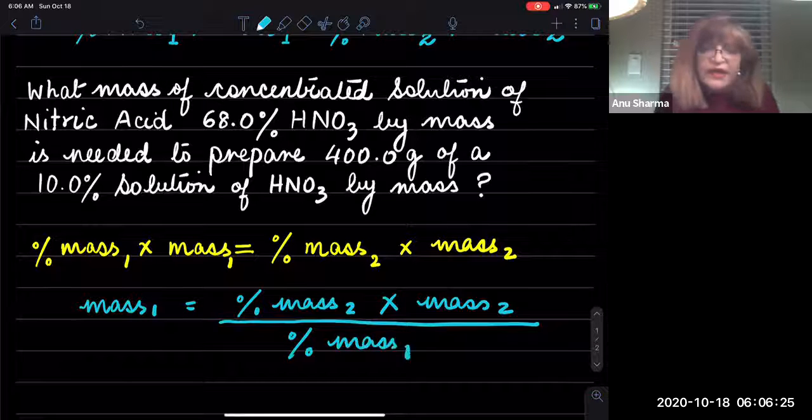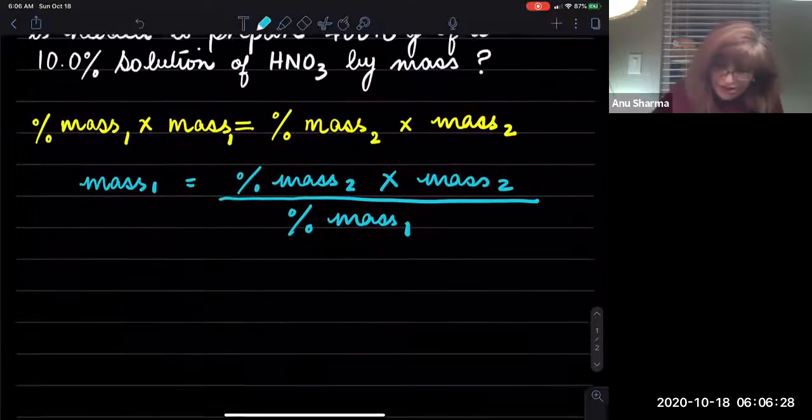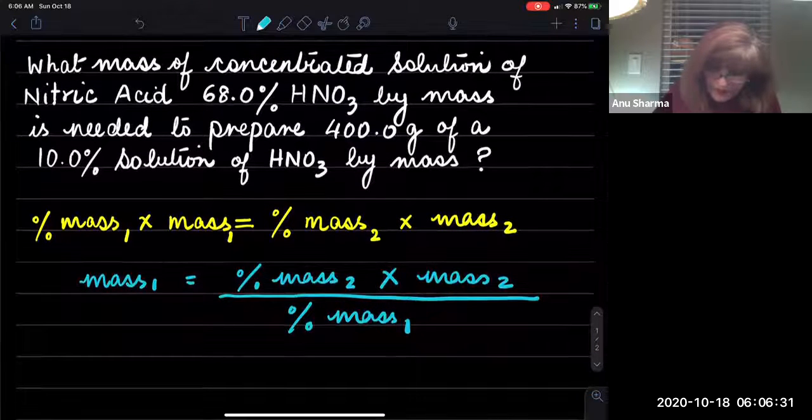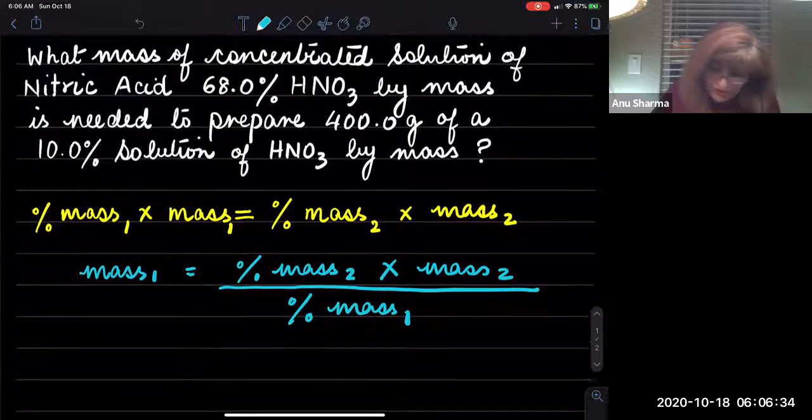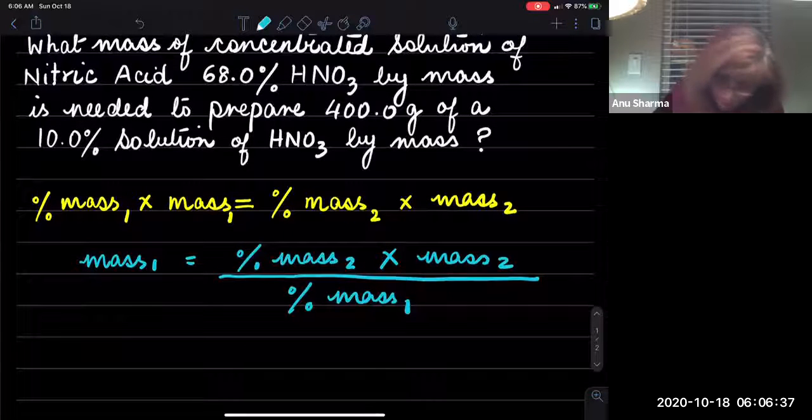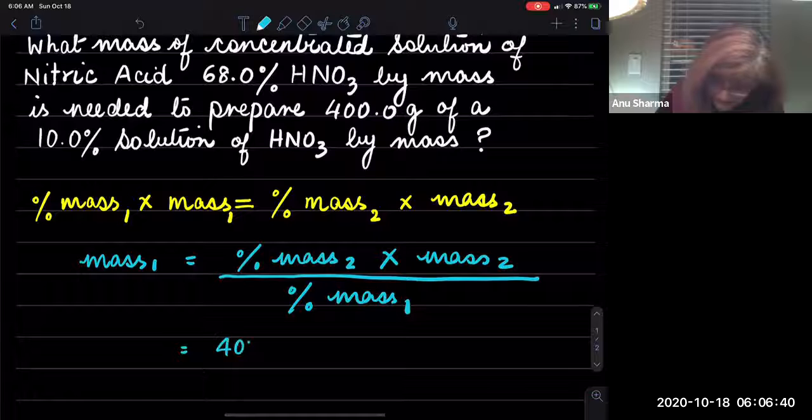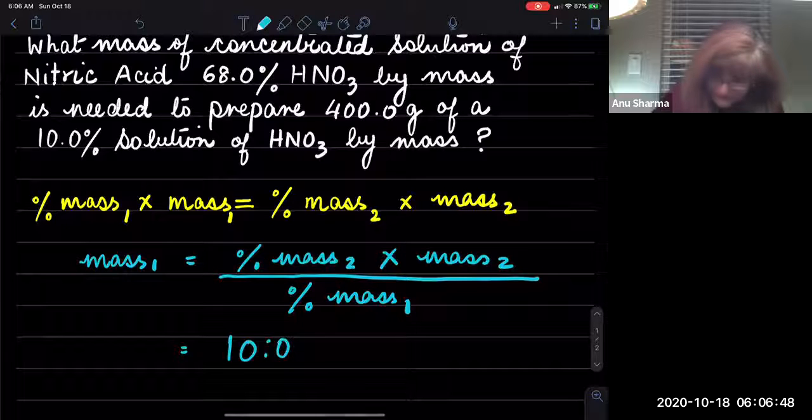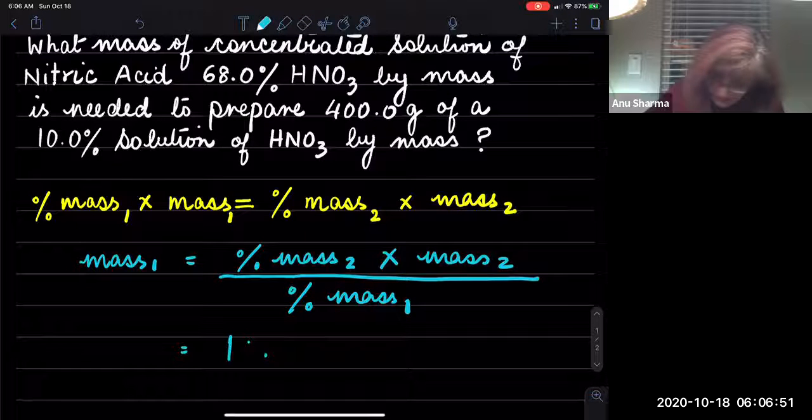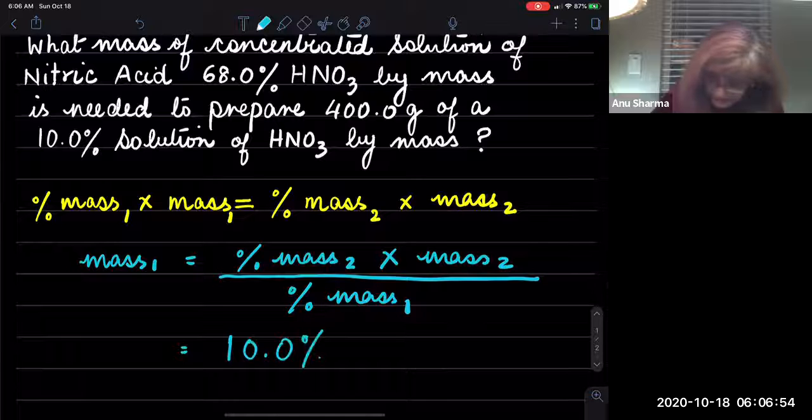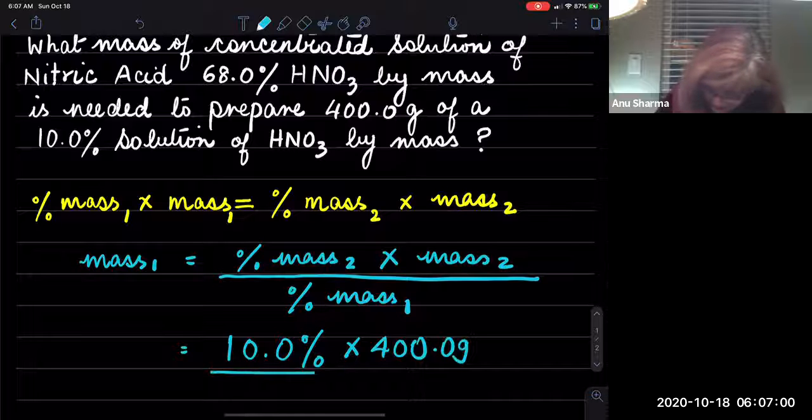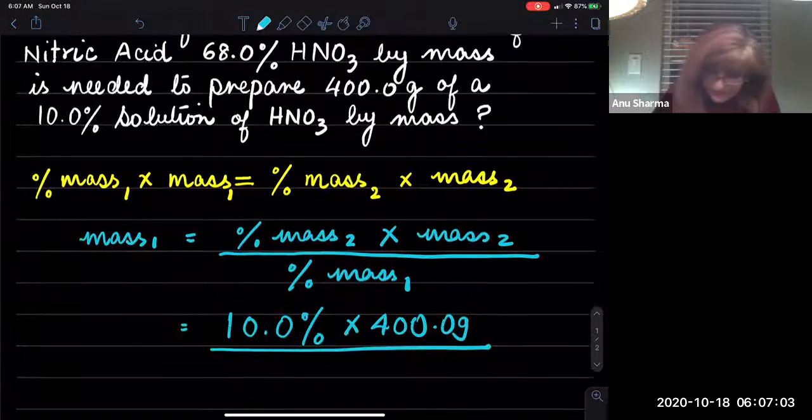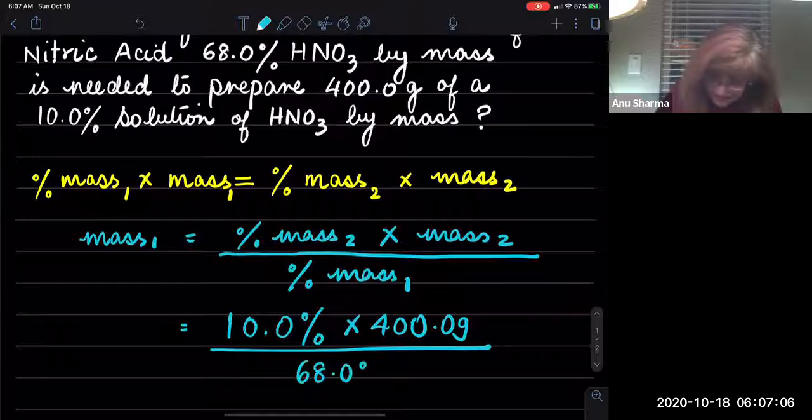Okay, so here we have the percentage of nitric acid and the 400 grams of 10% solution. So you're going to write down here 10.0% times 400.0 grams divided by 68.0%.